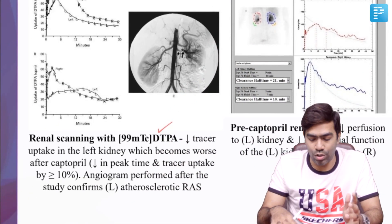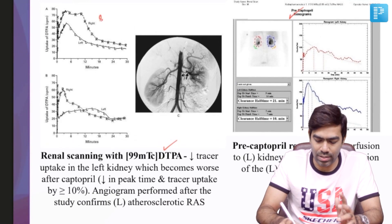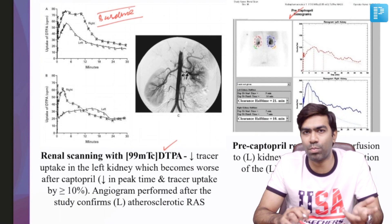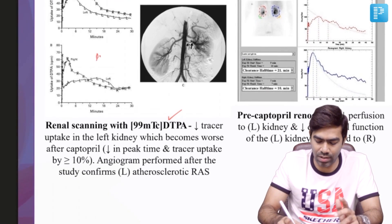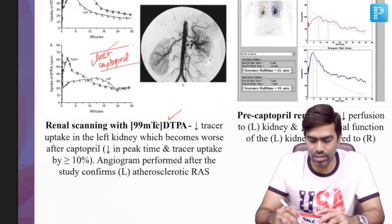In a patient with suspected renal artery stenosis, we are going to assess the baseline renograms first. These are called pre-captopril renograms. After giving captopril, we obtain renograms again — these are called post-captopril renograms — and we assess the difference. If there is a difference, that will tell you whether the patient has a vascular lesion like renal artery stenosis or not.